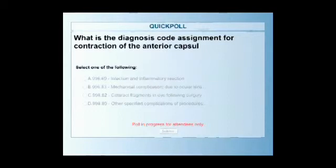And I'll read the question again. What is the diagnosis code assignment for contraction of the anterior capsule causing the intraocular lens implant to be displaced following extraction of a cataract? And so we have answer A, B, C, D.